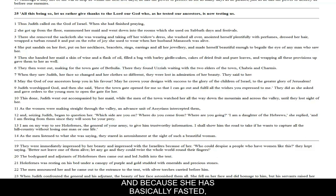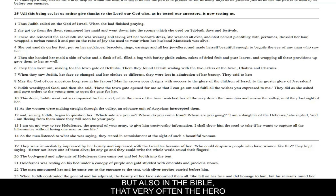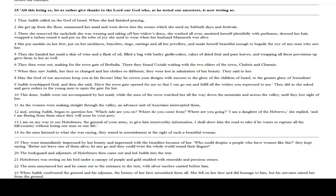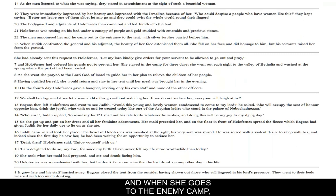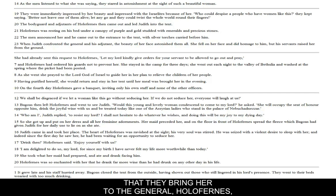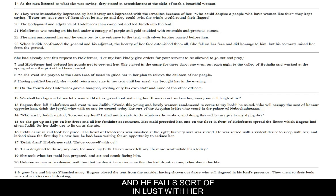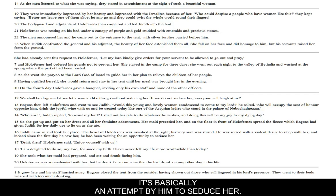Because Judith has fasted, God has marked her — and in a lot of mythology and the Bible, the hero is often marked in some way. In her instance, she is marked by being extremely beautiful and glowing with a sort of radiance. When she goes to the enemy camp, the guards are so taken by her beauty that they bring her to General Holofernes, who is described as very decadent. When she is brought to him, he's in a bed with purple coverings — a very expensive color — with gold and precious stones. He falls in lust with her and invites her to stay in his camp for several days to talk about peace, basically attempting to seduce her.